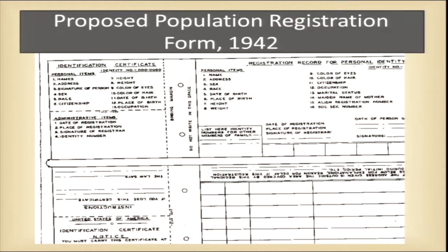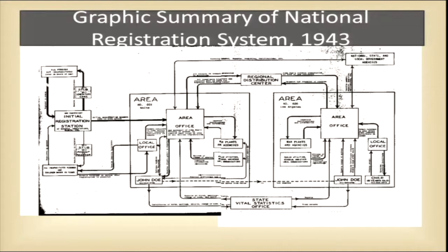This is a model of the form that was being proposed. It would obviously serve statistical purposes, but it would also fix an individual's identity for all sorts of administrative functions. The graphic shows how it was supposed to work: you registered, it went into an office, and if you moved from Maine to Los Angeles, your identity papers went with you. This is a really serious effort at understanding population dynamics and control.